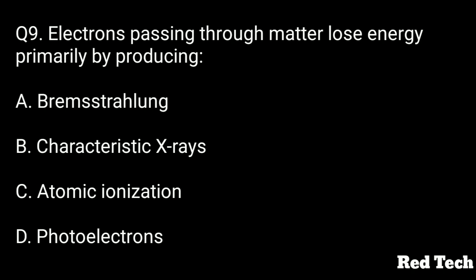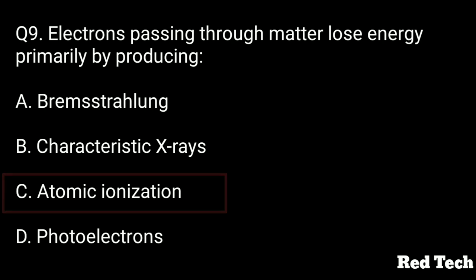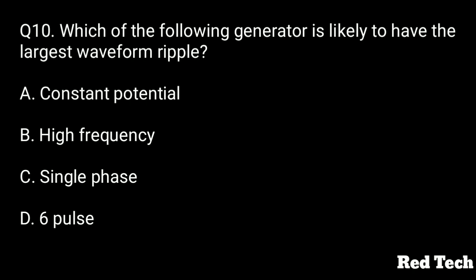The right answer is option C, atomic ionization. Electrons lose most of their kinetic energy by knocking out or exciting outer shell electrons.